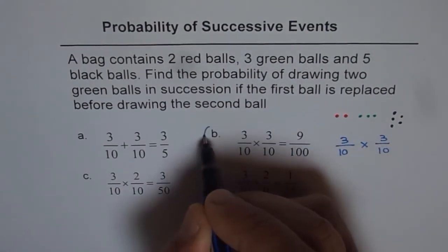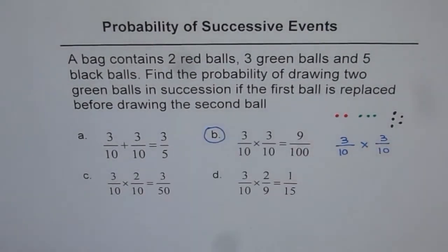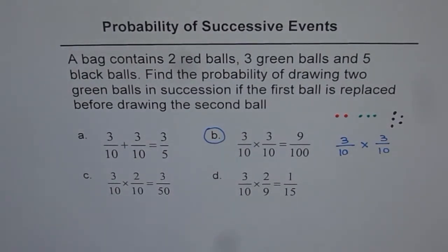So that is the answer — nine out of one hundred, which is answer B. Whenever you are trying to find the probability of successive events, the overall probability is the product of each individual probability. That is how we solve this. Thank you.